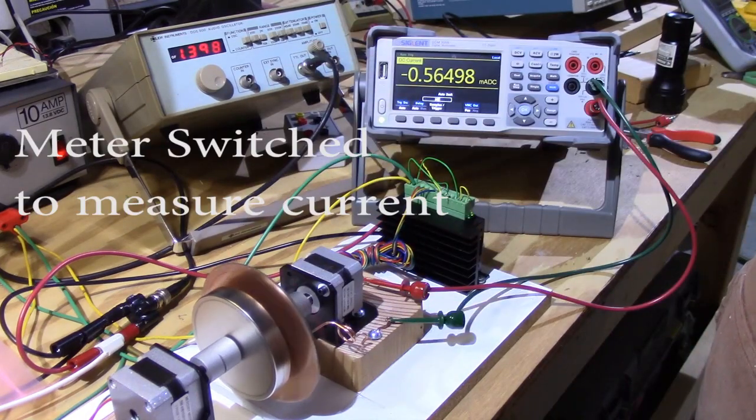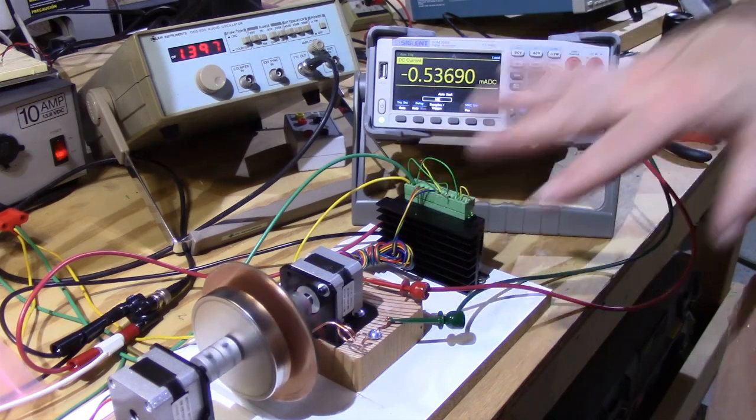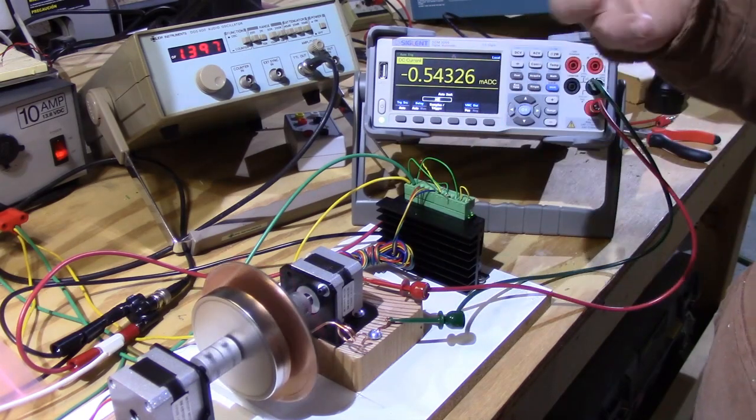The math shows that you cannot tell from a meter sitting on the brush system where the power is being generated. That's what we determined when we looked at the math.